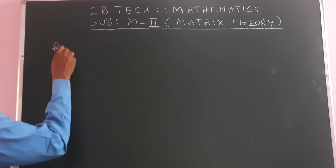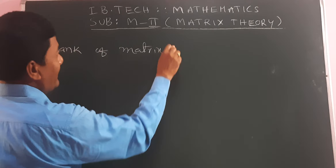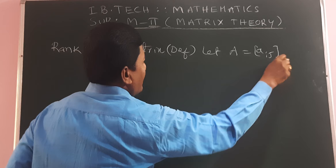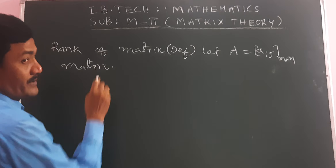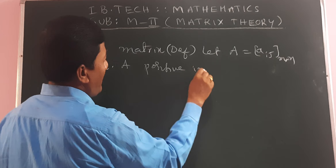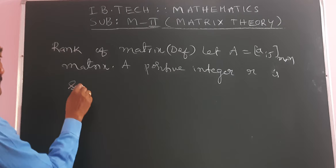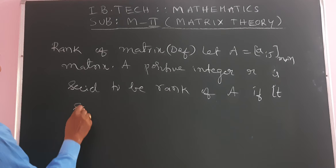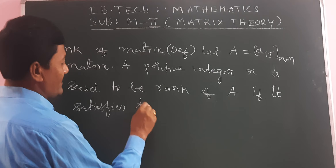Rank of a Matrix. Definition: Let capital A equal to A_ij be an M by N matrix. A positive integer R is said to be the rank of A if it satisfies two conditions.